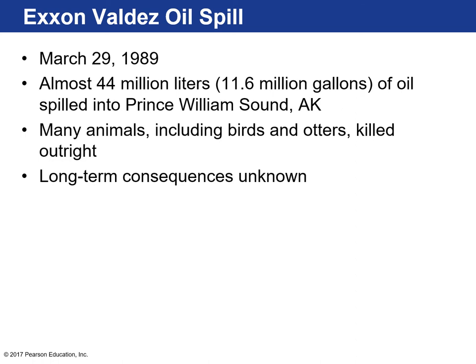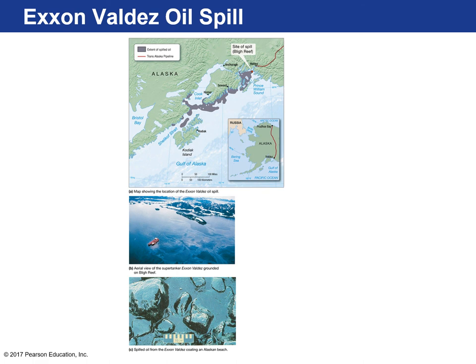The immediate impacts of oil spills are drastic and devastating, while the long-term consequences are less well understood. Here's that 11-kilometer stretch of Alaska essentially right on the border with Canada — this entire area was covered by an oil slick. Here's a close-up image of the emulsified oil that spilled as the tanker ruptured and spilled into the coastal waters.